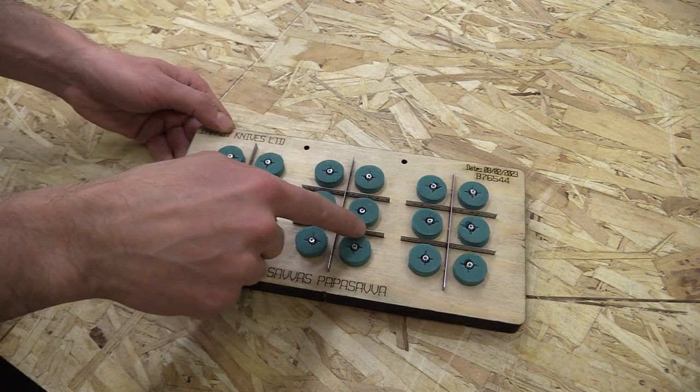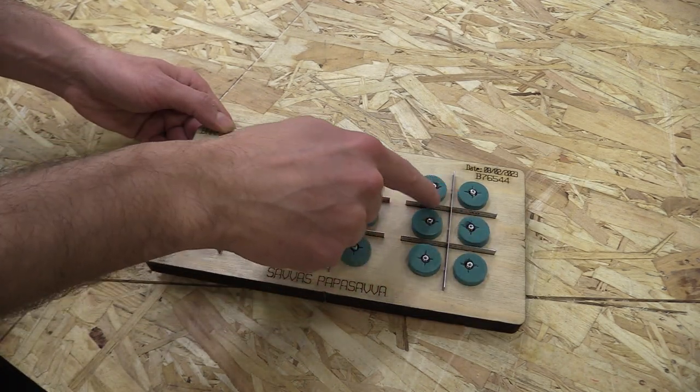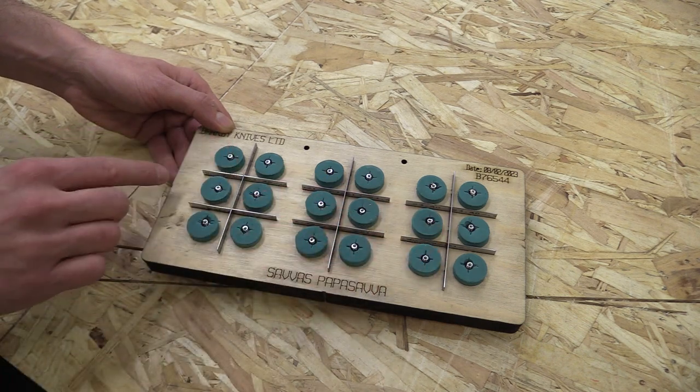You've got this criss-cross shape which are for creasing the playing card into six sections.